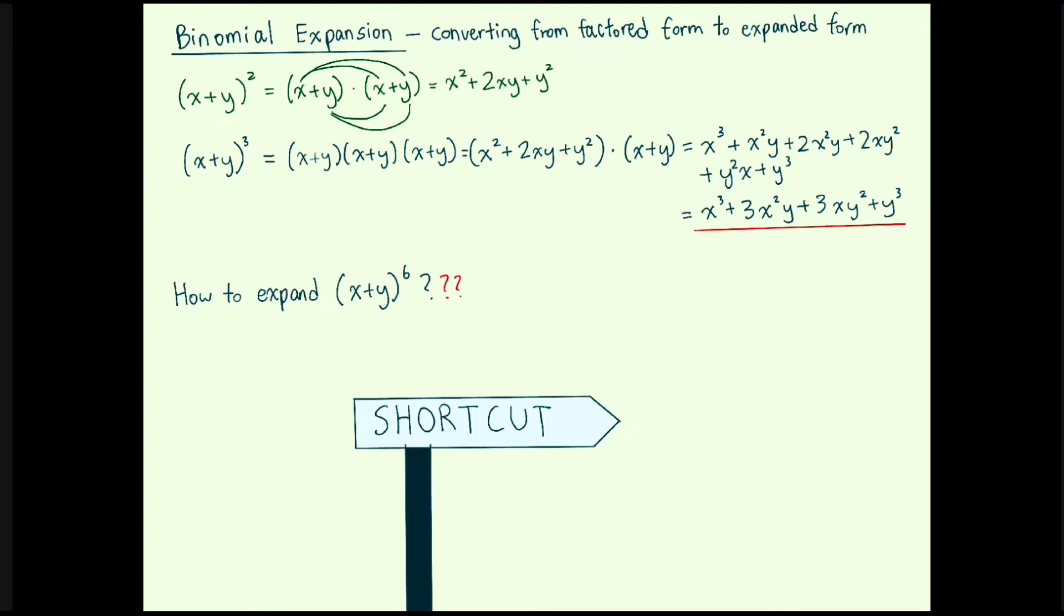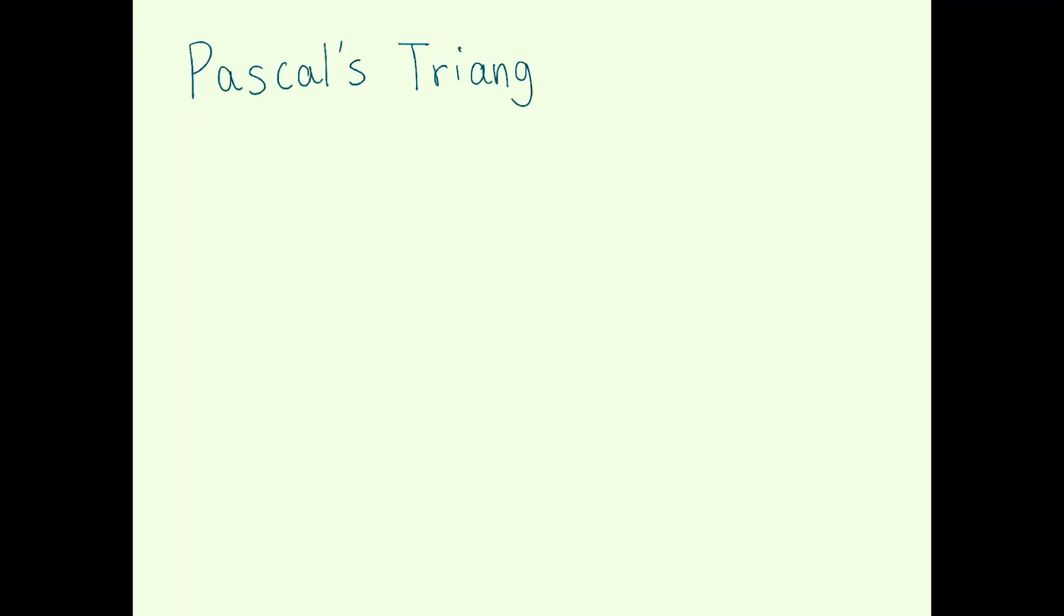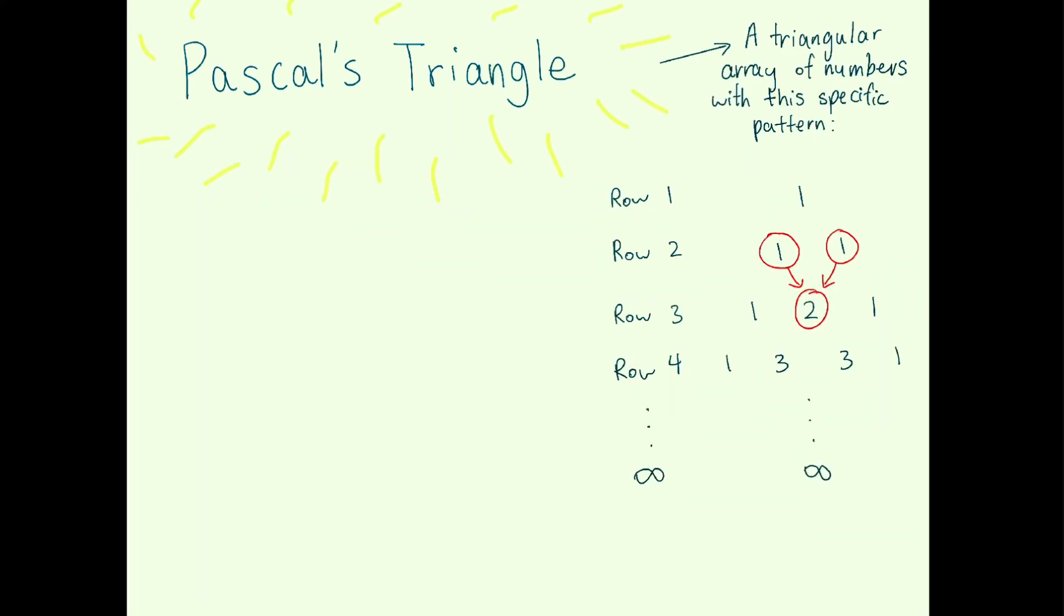So here is a useful shortcut, the concept of Pascal's triangle. This is an array of numbers arranged in the shape of a triangle and has a specific and interesting pattern. The numbers in each row are the sums of the two numbers directly above it. The triangle goes on to infinity.